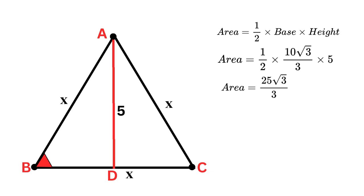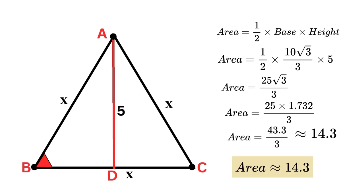Square root of 3 is approximately equal to 1.732. So area equals 25 times 1.732 over 3, and it becomes 43.3 over 3, which is approximately equal to 14.3. And that is our required answer: the area of the equilateral triangle is approximately equal to 14.3.